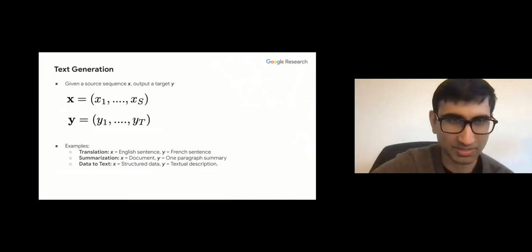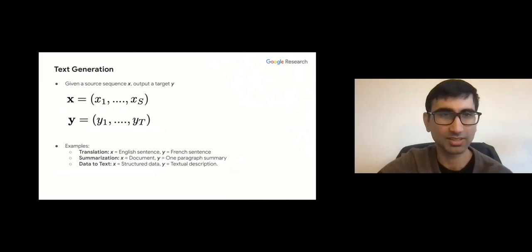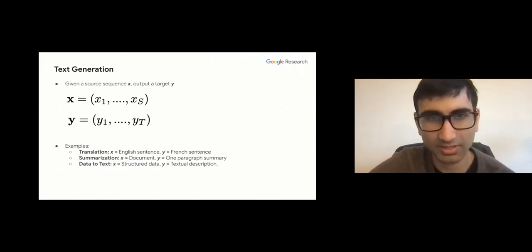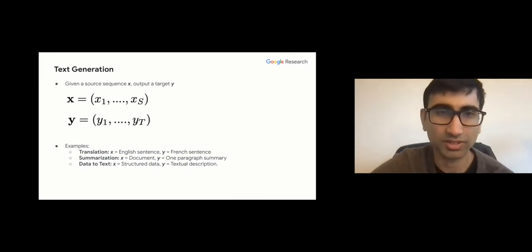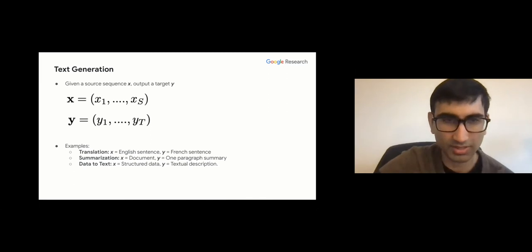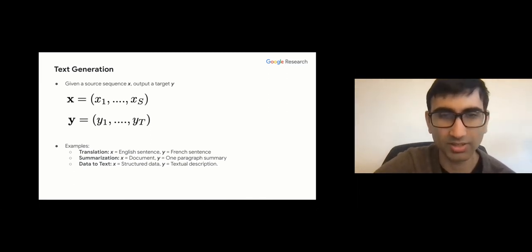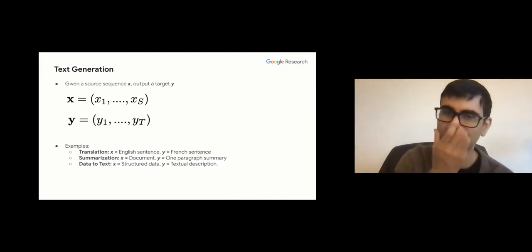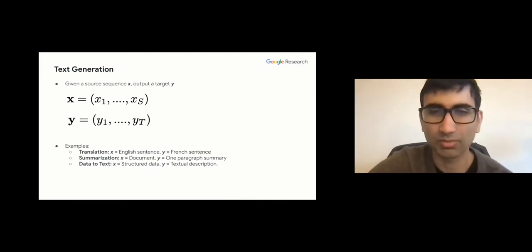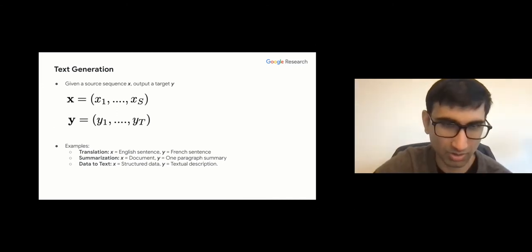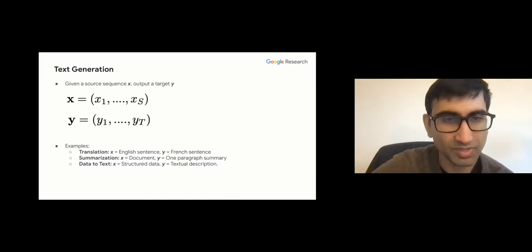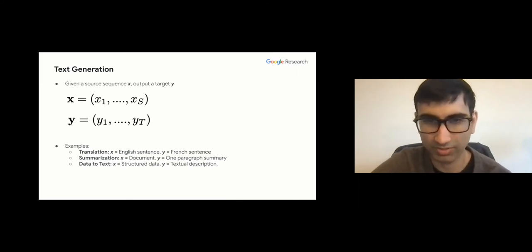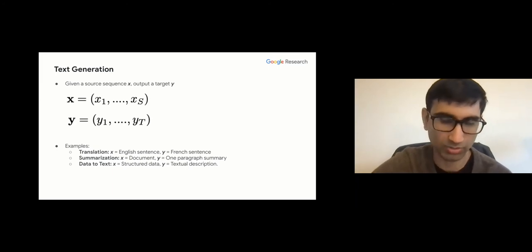The general topic of this lecture is on text generation. Text generation is a structured prediction task where you're given a source sequence x with s tokens x1 to xs, and your goal is to output a target sequence y which is y1 to yt. This has many practical applications like translation, summarization where x is a document and y is a summary, or data-to-text where x is structured data like a table and y is a textual description.